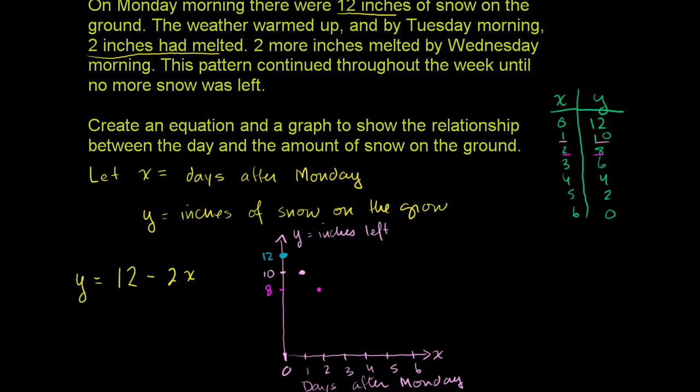And then on 3 days after Monday, we have 6 inches on the ground. And you can see that a line is forming here. And then if we go to 4 days after Monday, we have 4 inches on the ground.